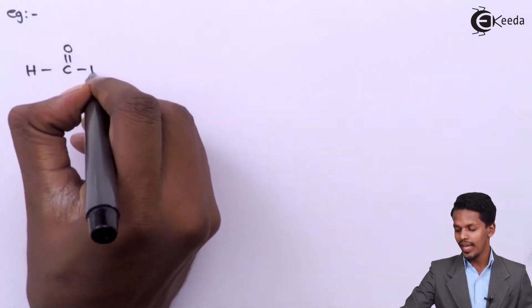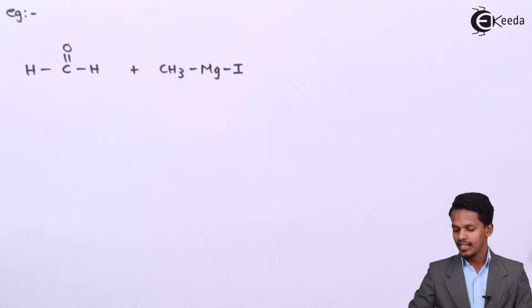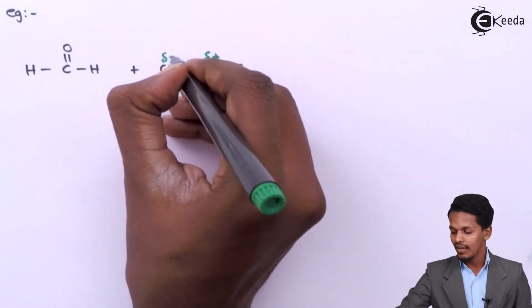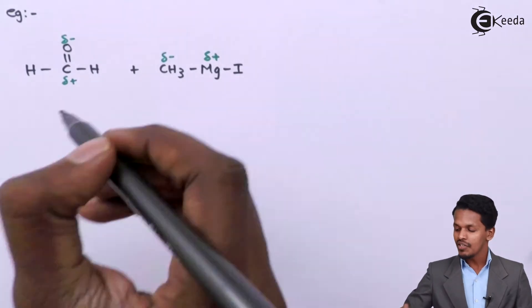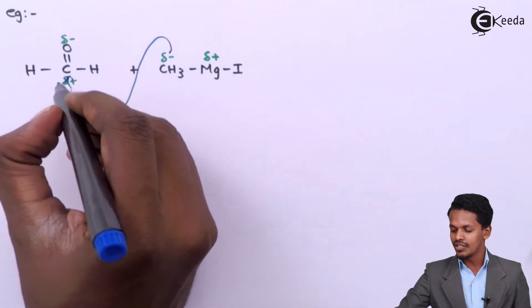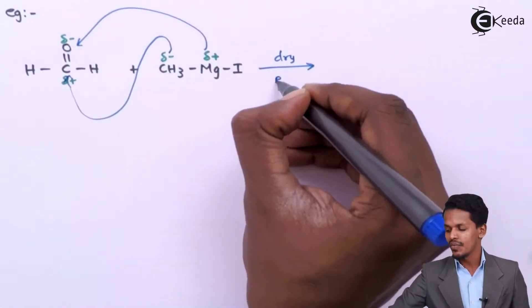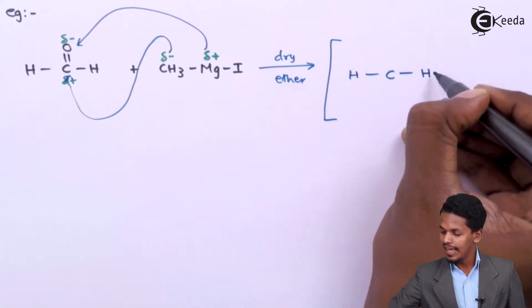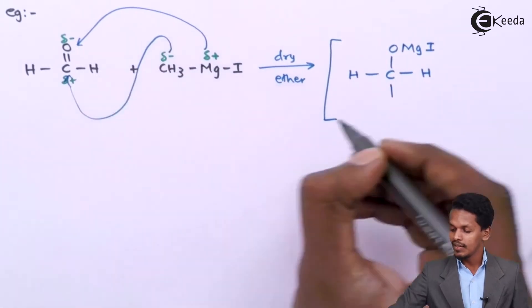For example, consider formaldehyde (HCHO) reacting with methyl magnesium iodide (CH3MgI). The MgI acquires a positive charge, the CH3 group acquires a partially negative charge, and the carbonyl carbon acquires a partially positive charge. The methyl group attaches to the carbon atom and MgI attaches to the oxygen atom, forming the adduct in the presence of dry ether.